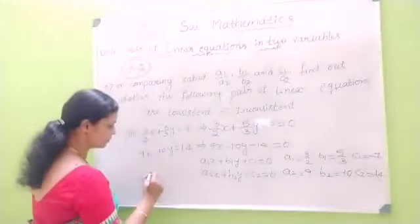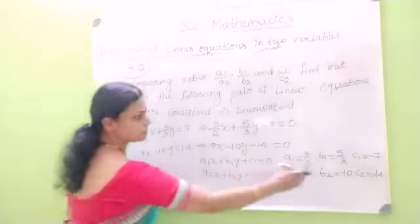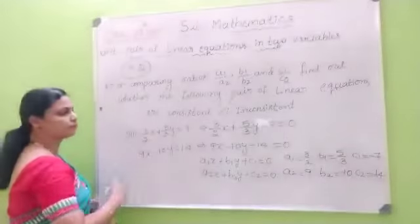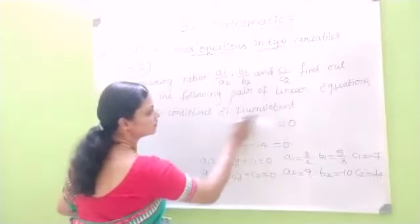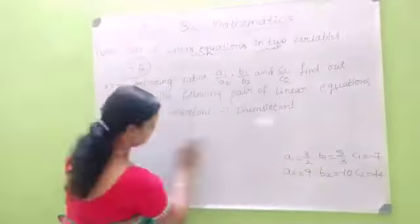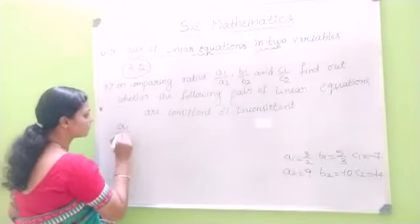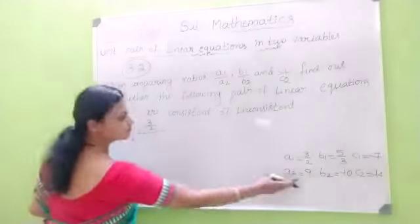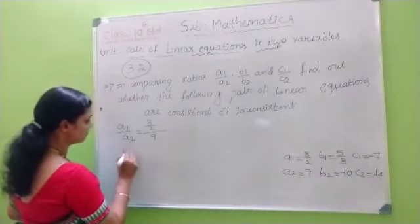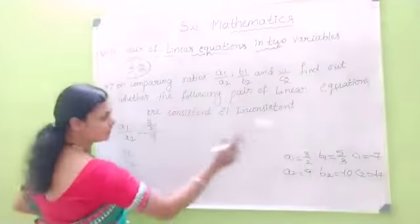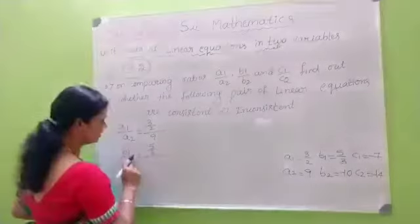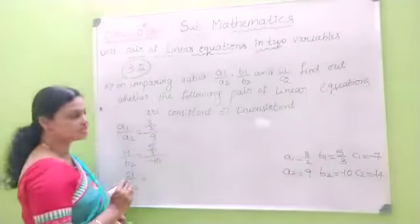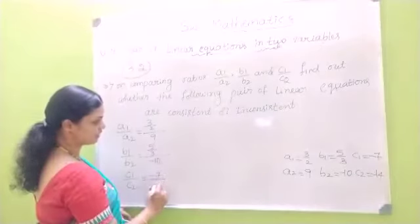Now find the ratios. A1 by A2 is (3/2) divided by 9. B1 by B2 is (5/3) divided by minus 10. C1 by C2 is minus 7 divided by minus 14.